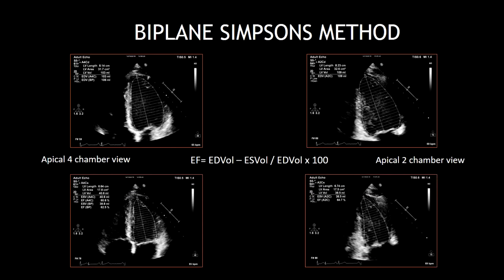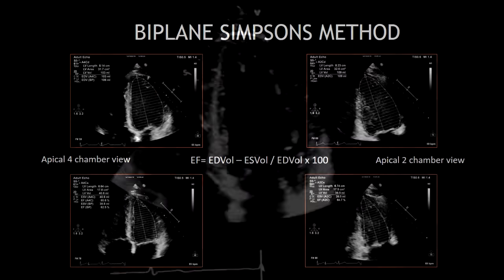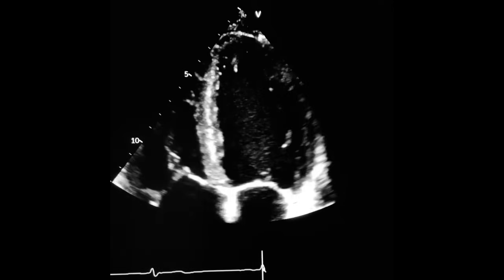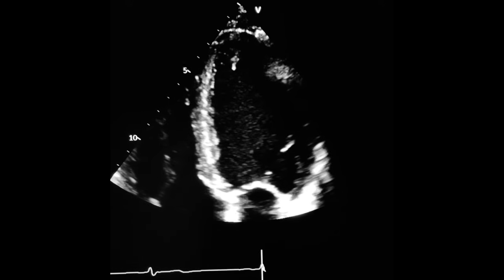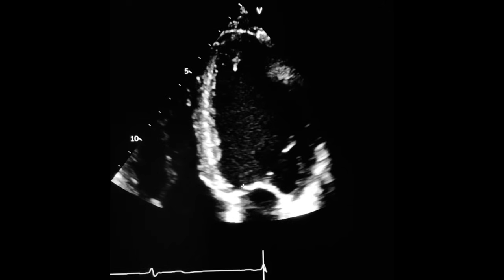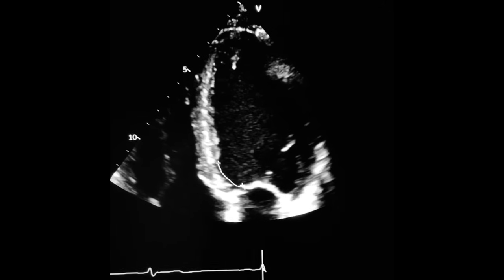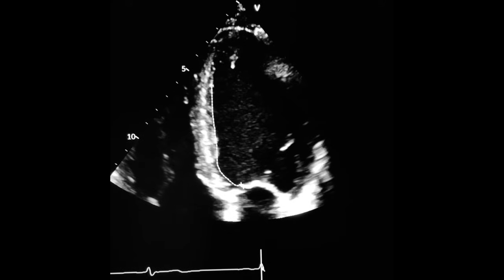Now, I'm going to show you step by step how to estimate the ejection fraction using the biplane Simpson's method. First, find your apical four-chamber view and obtain a zoom view of the left ventricle. Freeze the image at the end of diastole and trace around the endocardial border to get the end-diastolic volume.